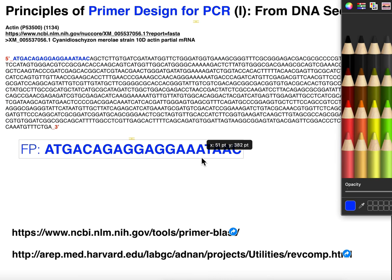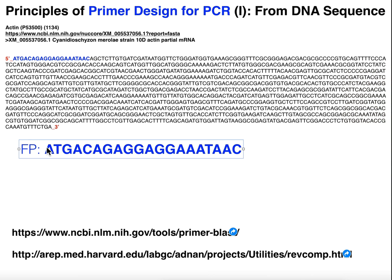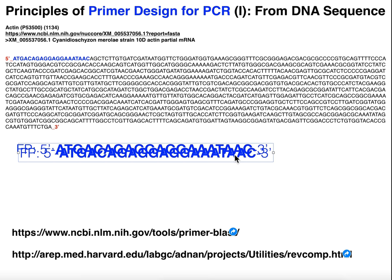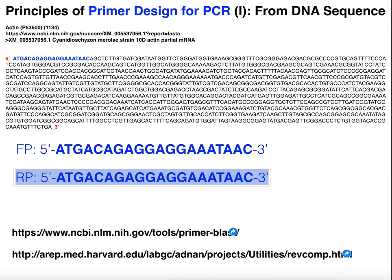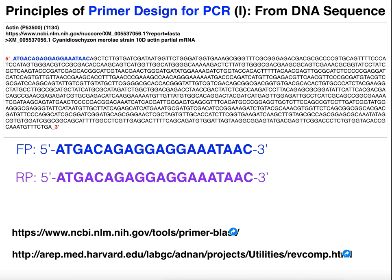Now with the reverse primer, you do have to do a little bit more work. I'll denote that this is the five-prime end and down here is our three-prime end. The reverse primer — if I want the entire gene sequence — should obviously have the end of the sequence contained within it. So I count over 20 nucleotides from the three-prime end as well.